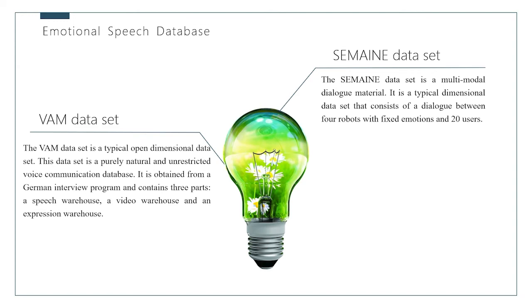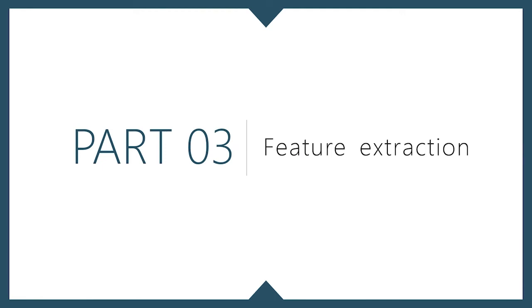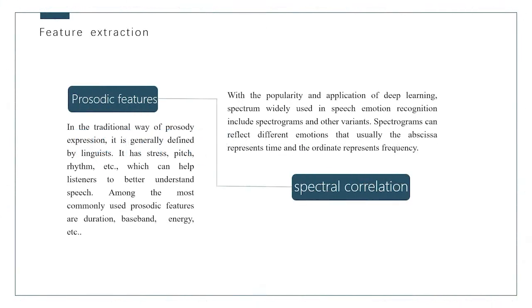Now we move to the part on feature extraction. Prosody does not affect the content of speech, but it affects the true meaning of the content. The same sentence can have different meanings with different prosodic features. The research on speech emotion recognition uses prosodic features as an important reference. With deep learning, spectral features are also used: the coordinate point value represents the energy of speech data, and the size of the energy value is generally expressed by color — the darker the color, the stronger the energy of that point.